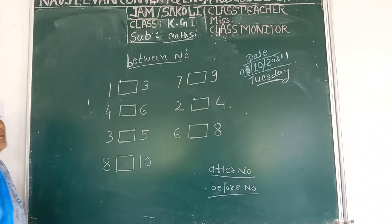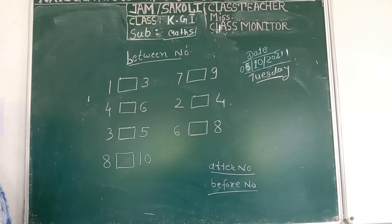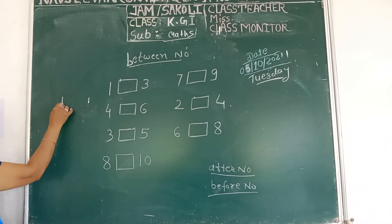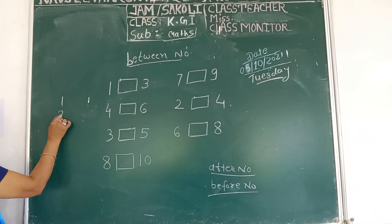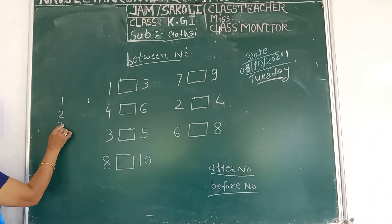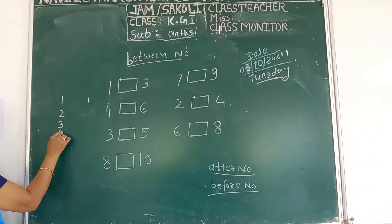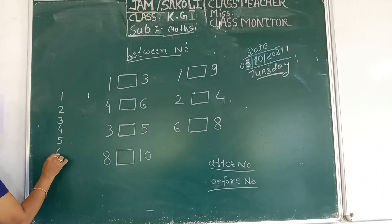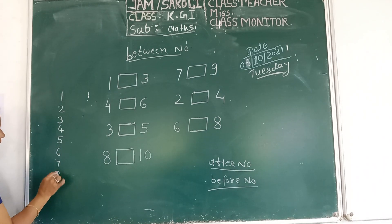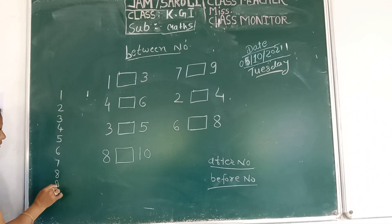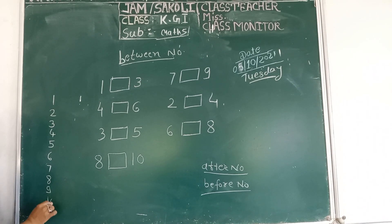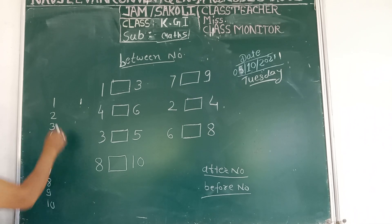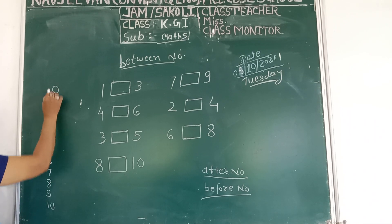Which waala number — which number comes between? Do you know? 1, 2, 3, 4, 5, 6, 7, 8, 9, 10. Which waala number? Which waala number?